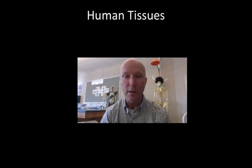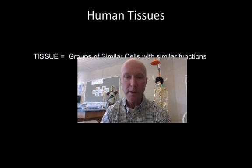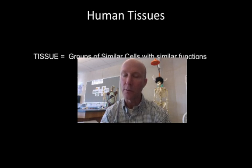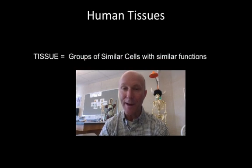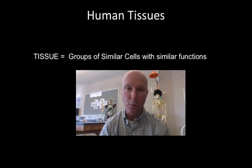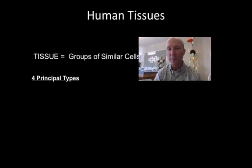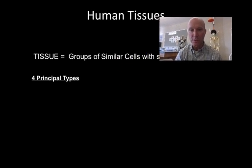Welcome to this screencast introducing the tissues of the human body. A tissue is a group of similar cells with similar functions. There are lots of different kinds of cells in the body — in fact there are 210 different kinds. In order to study them we have to group them based on their basic functions, and we find that there are four principal types of tissues in the body.